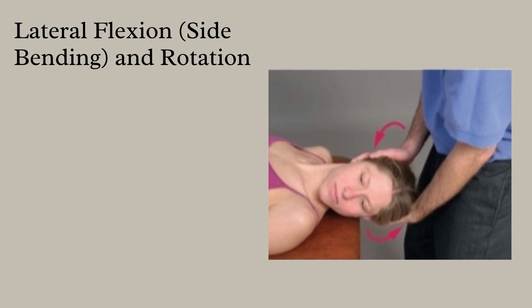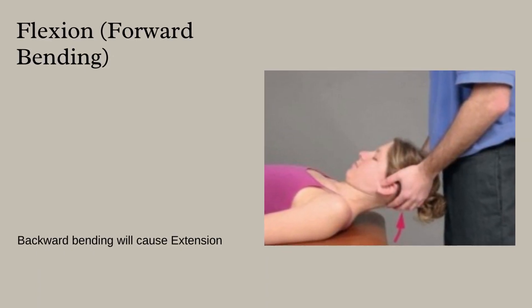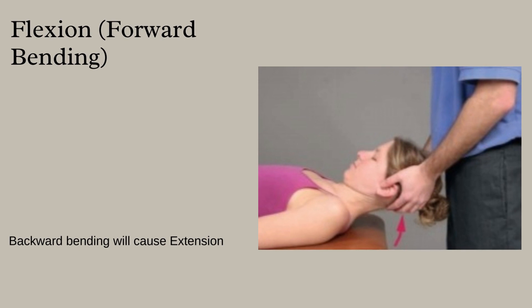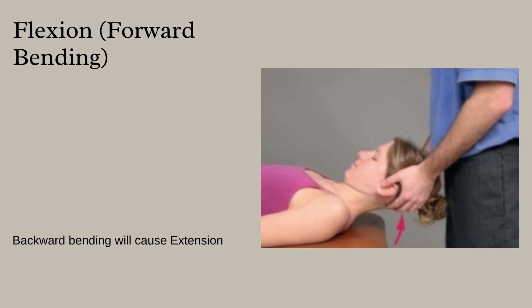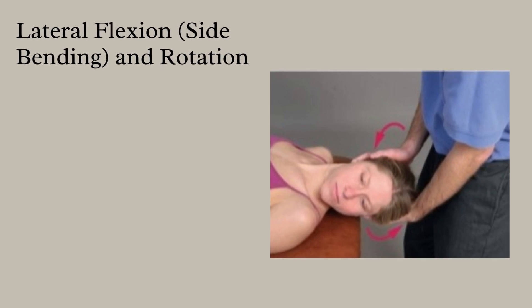Lateral flexion is performed in the way shown in the picture. An important note for extension of the cervical spine: if the patient is supine, only the head and upper cervical spine can be extended. The head must clear the end of the table to extend the entire cervical spine. The patient may also be prone or sitting. These were the range of motion techniques for the cervical spine.